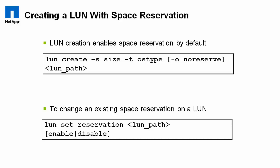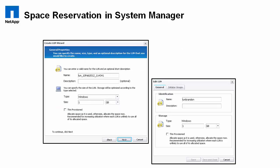Also, if you attempt to enable a reservation and the LUN is already at the point where the volume cannot satisfy that reservation, it will error out with a message saying 'unable to set LUN reservation due to insufficient space' or words to that effect. Through System Manager it's pretty easy — when you run the LUN creation wizard there's a checkbox. Checking and unchecking that checkbox will simply set reservation enabled or disabled. After the fact, you can go back and edit the LUN settings and the same checkbox is there, with the same effect.